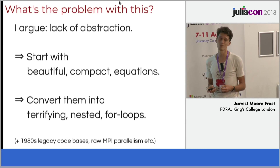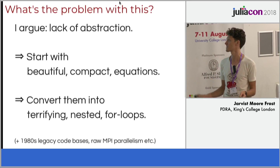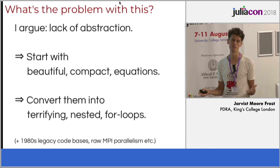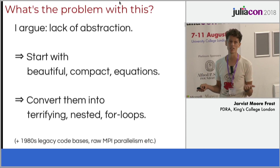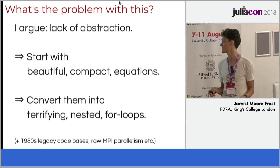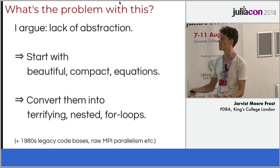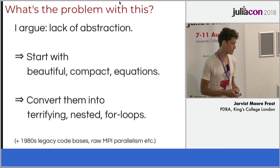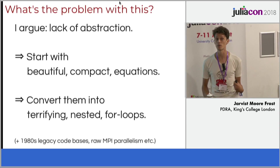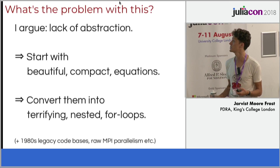So why is this a problem? The issue is that you start with these beautiful compact equations that you write down as a physicist, and you end up converting them into terrifying nested for loops. You often have legacy code bases going back to the 1980s — some beautiful all-capitals Fortran 77 stuff you have to deal with. All of the parallelization is often done with raw MPI, and as a PhD student you can basically spend your entire PhD just getting up to speed with a code base and understanding the software architecture.